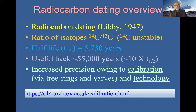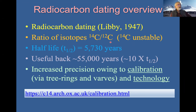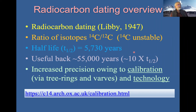A quick review of radiocarbon dating: it was invented in 1947, so we could date rocks long before we could date organic material. The lab work involves looking at the ratio of the unstable isotope carbon-14 to stable carbon-12 in any organic sample. Carbon-14 has a half-life of 5,730 years, so the oldest age you can get is roughly ten times the half-life—about 55,000 years.